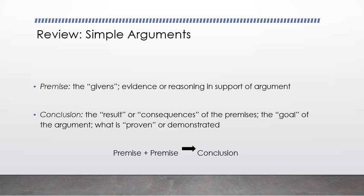As a review, let's go back to the idea of simple arguments — the basics. Two components: premises and conclusion. The premises are the givens, the grounds, the evidence or reasoning that you are providing in support of your argument. The conclusion is the result or consequence of the premises — it's the goal of the argument, what you are trying to prove or demonstrate. In a good argument, if the premises are true, then the conclusion is necessarily also true.